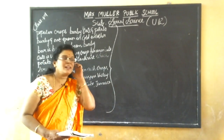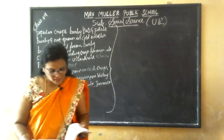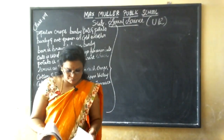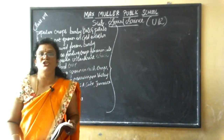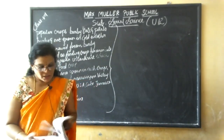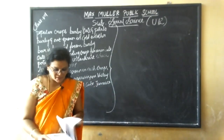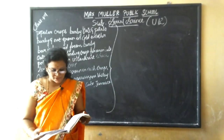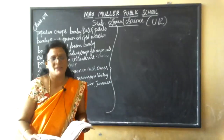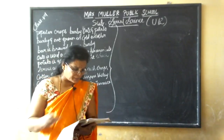Good morning students, welcome back to online class. In the previous class we discussed North America — the continent — covering agriculture, coastal plains, climate and natural vegetation. Now we are going to study about the remaining concepts of agriculture.